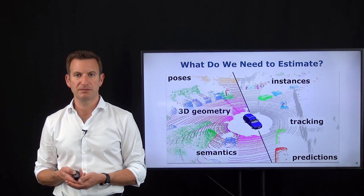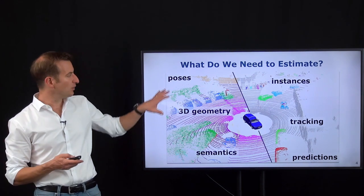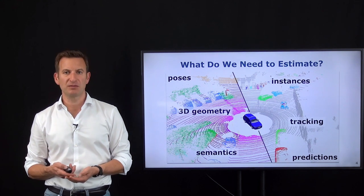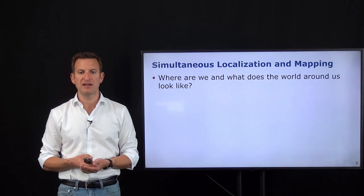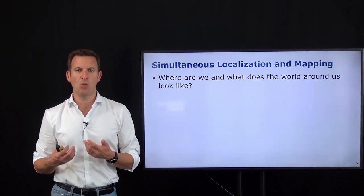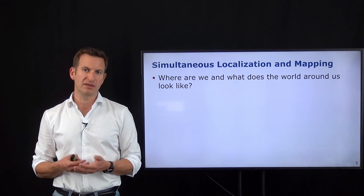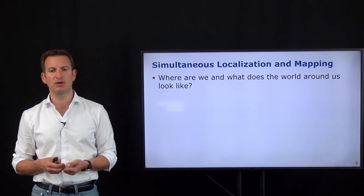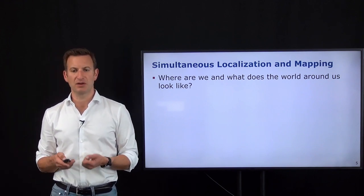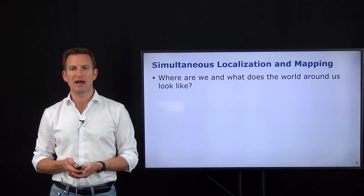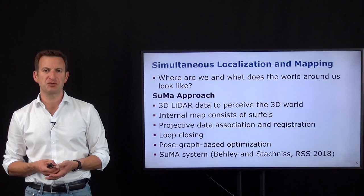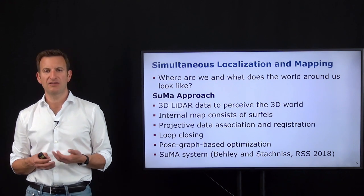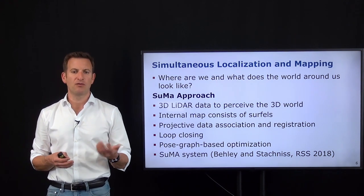The first thing you need to address if you want to estimate poses and geometry is to provide a solution to the SLAM problem — simultaneous localization and mapping. SLAM allows you to estimate where you are and what the world surrounding the vehicle looks like from a geometric point of view. We are relying here on the so-called SUMA approach, a technique that Jens Behley, a postdoc in my lab, has developed. It is a LiDAR-based SLAM system designed for autonomous vehicles.